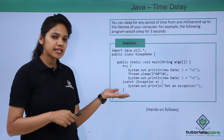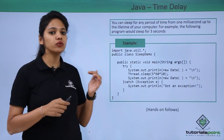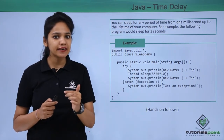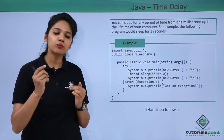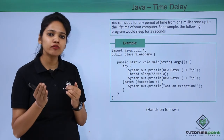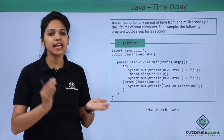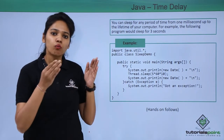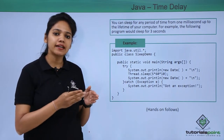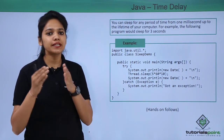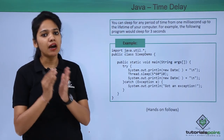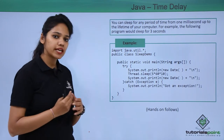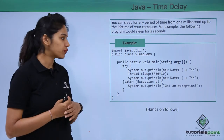In this example, we will be seeing how you can display the current date and time, then make your program sleep for three seconds, and then display the current date and time again. That is, what is the date and time now and what would be the date and time after three seconds. Let us understand with the help of this program.